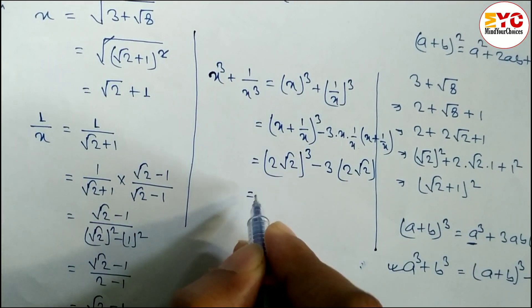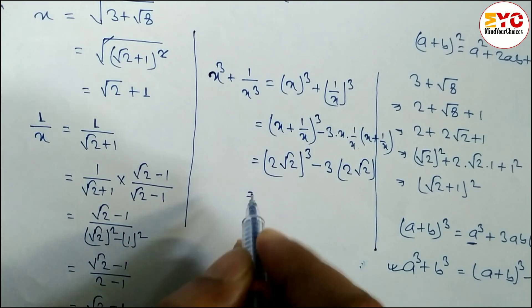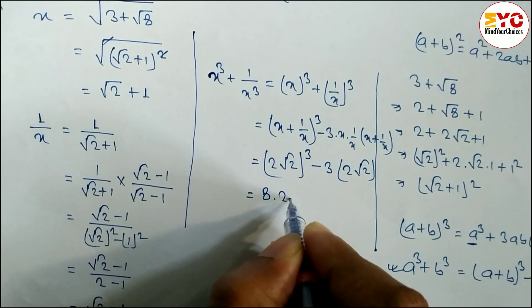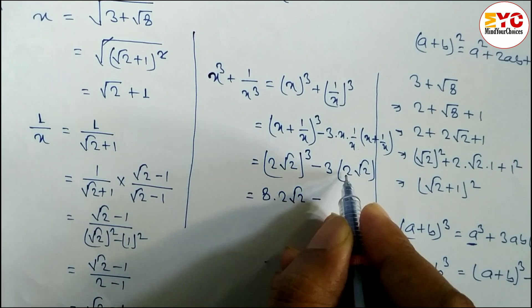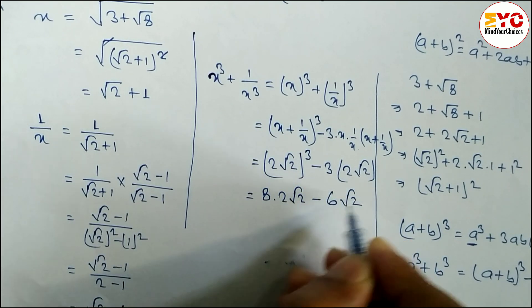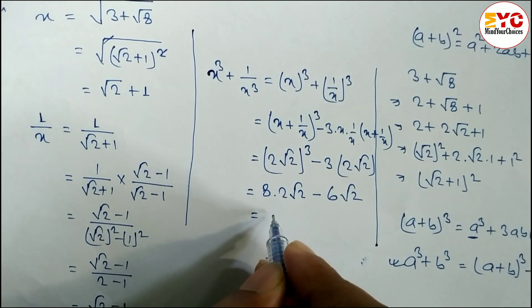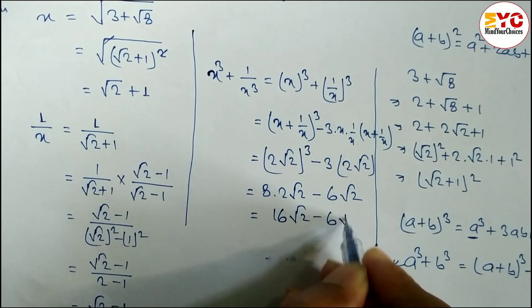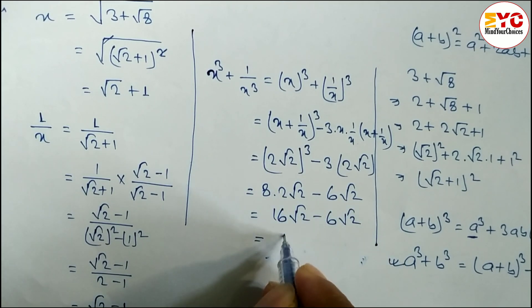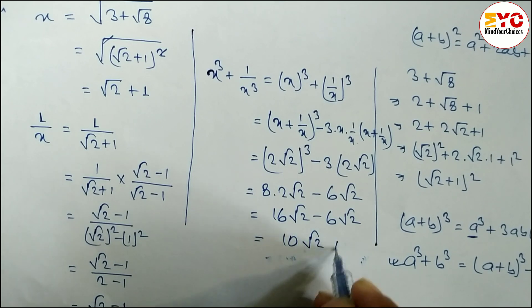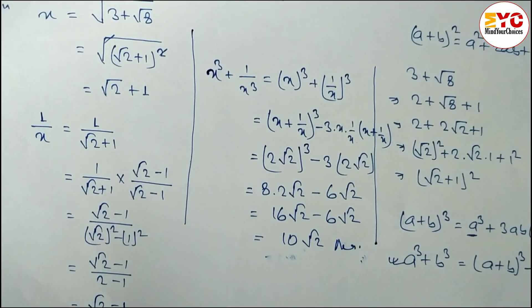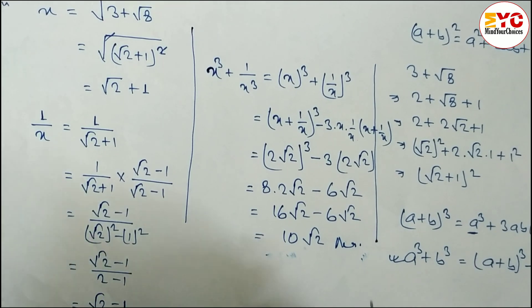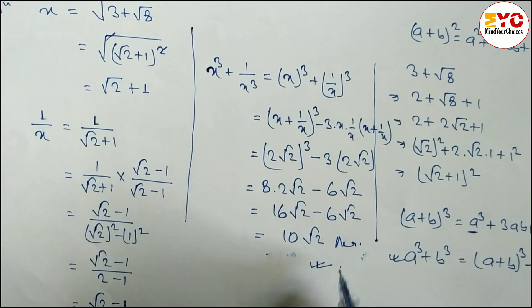Calculating: (2√2)³ = 2³ · (√2)³ = 8 · 2√2 = 16√2. Then 3 × 2√2 = 6√2. So we get 16√2 − 6√2 = 10√2. Therefore, the value of x³ + 1/x³ = 10√2.